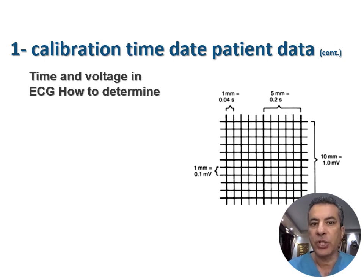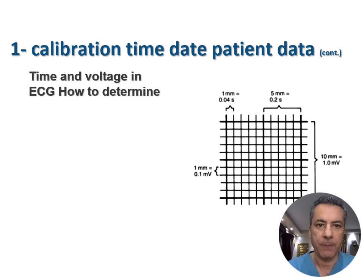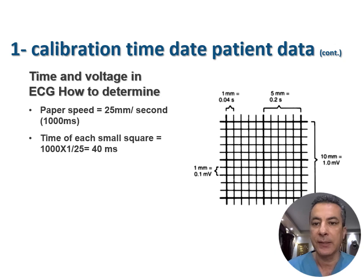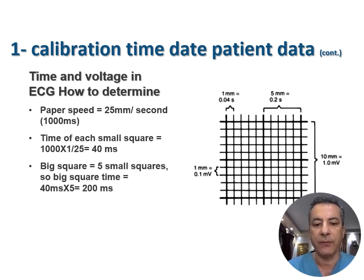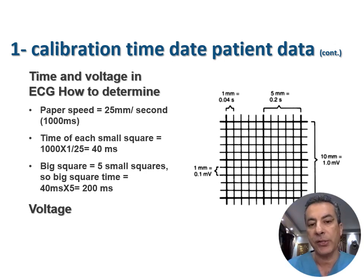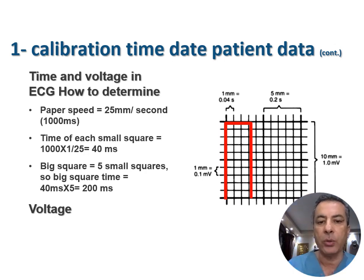Understanding an ECG, which is essentially a graph drawn on graph paper, involves recognizing the significance of horizontal and vertical markings. Horizontal markings identify and measure time: at the standard paper speed of 25 mm per second, each small square corresponds to 40 milliseconds, and each big square encompasses 200 milliseconds. Vertical markings represent voltage: the machine typically draws a calibration mark covering 10 small squares, with a value of 1 millivolt, making each small square equivalent to 0.1 millivolt or 100 microvolts.